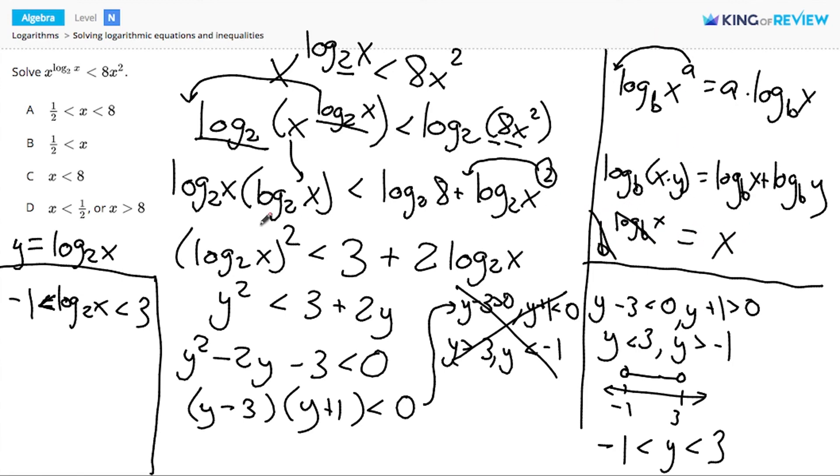Since I need to get rid of log base 2, I'm going to raise 2 to the power of all three parts of this inequality. 2 to the negative 1 is one half. 2 to the log base 2 of x cancels each other out and we just get x. And 2 to the third power is 8. So now I have solved my problem for x and we get that the answer is (a): one half is less than x, which is less than 8.